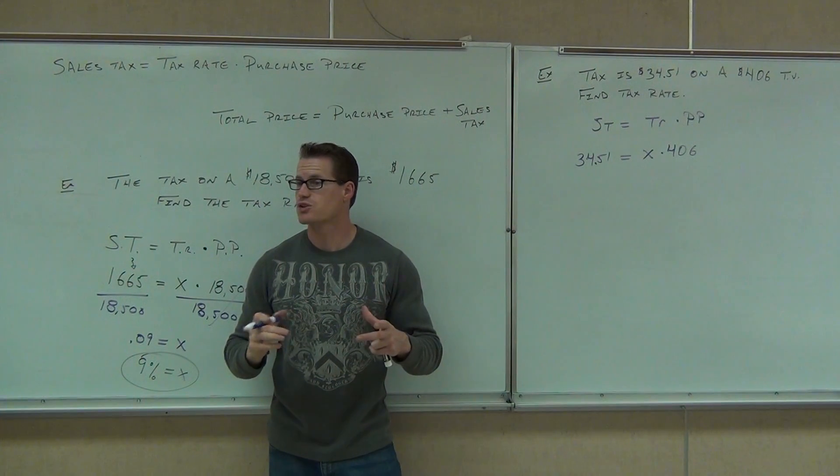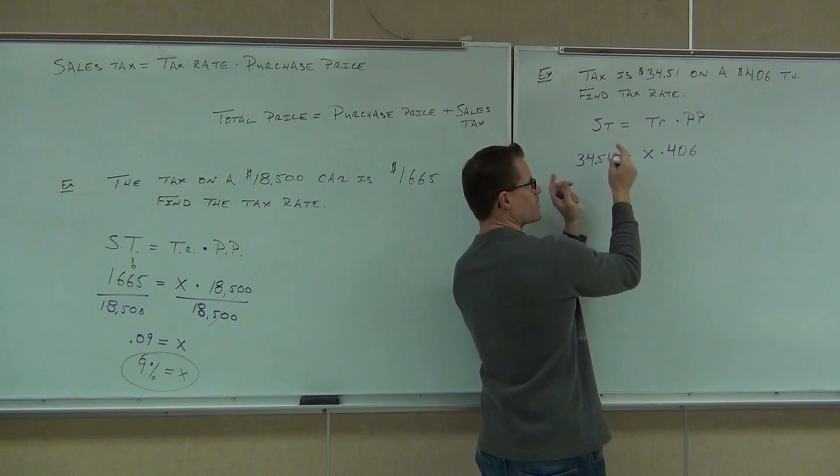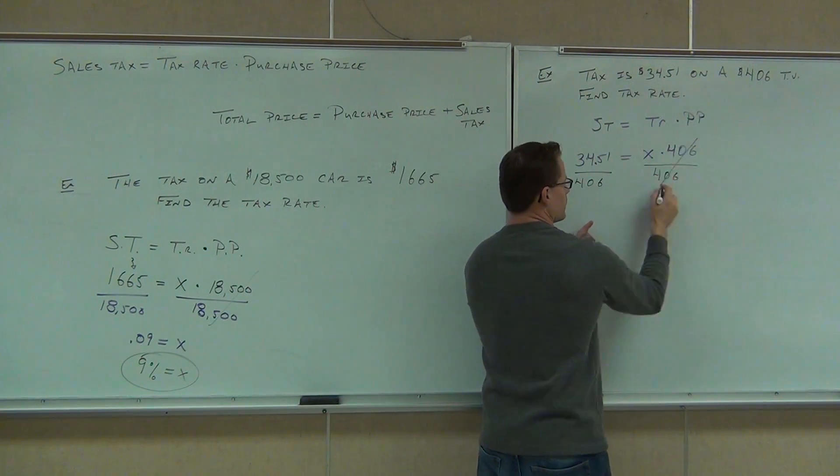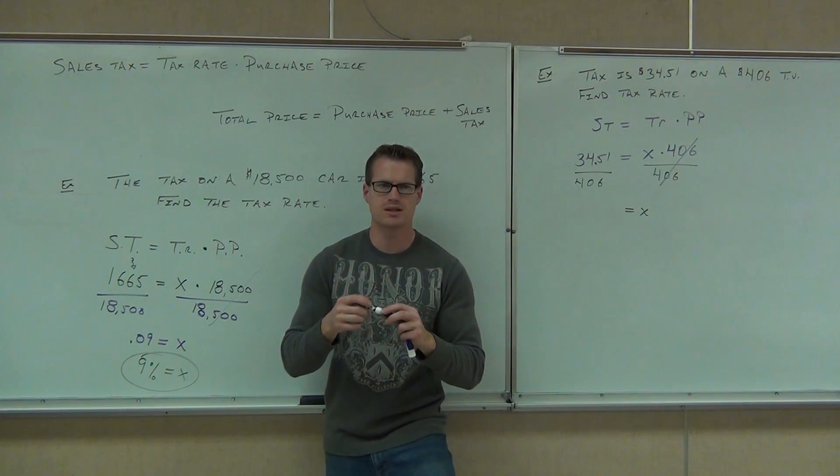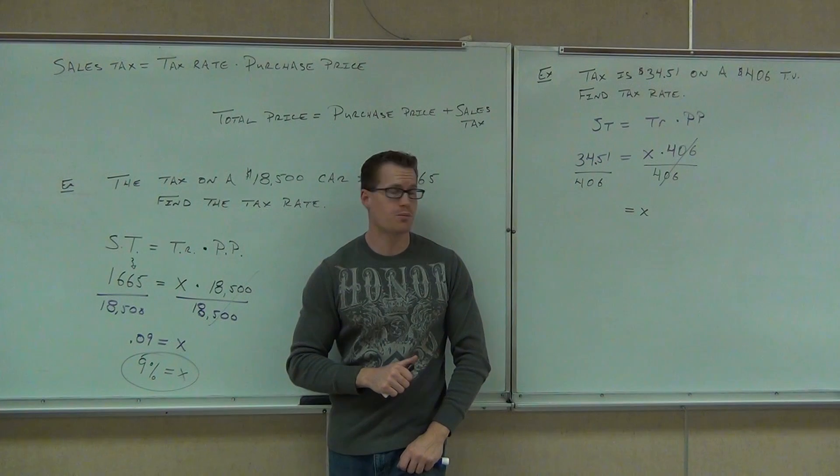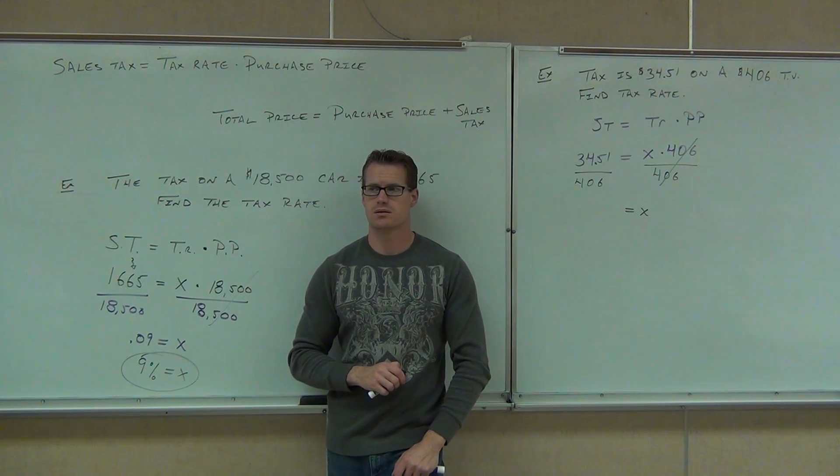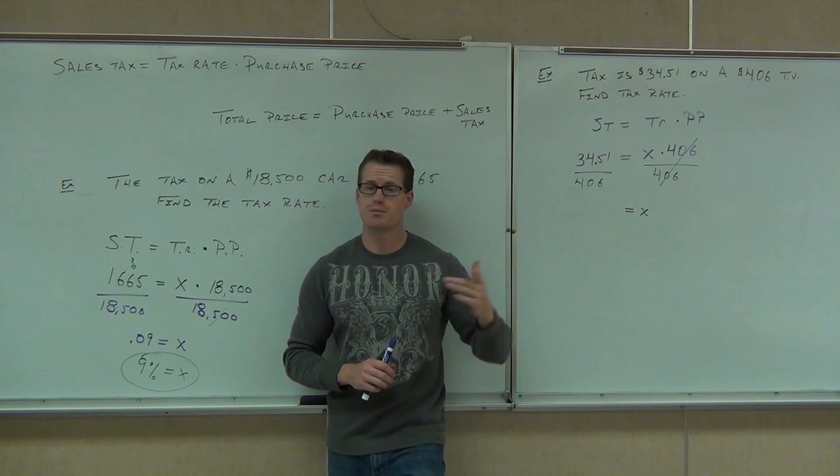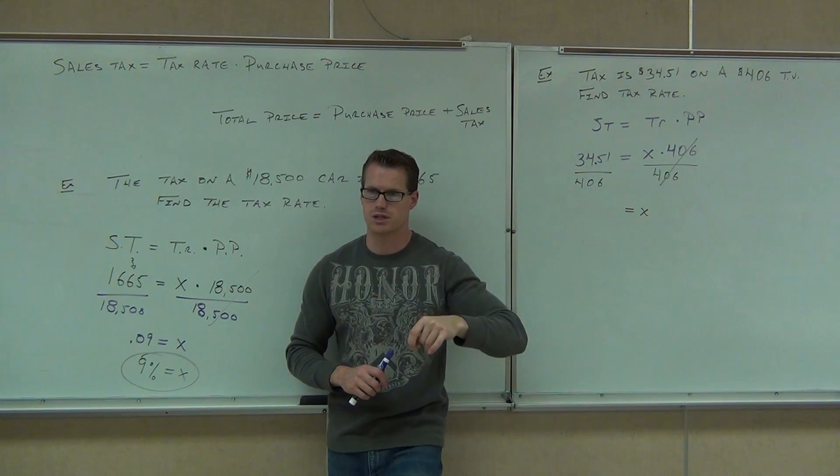Now we're trying to solve for X because X is our tax rate. How do you solve for X? Divide. We're trying to get X by itself. That means get rid of the 406. We have to do that by division. We get X equals, you're going to take 34.51 divided by 406. Does it matter which order you plug these numbers in? If you plug in 406 divided by 34.51, are you going to get the same answer? Try it. Division is not commutative, which means the order in which you plug them in is very important. What do you get out of that?